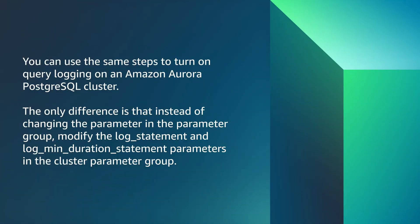You can use the same steps to turn on query logging on an Amazon Aurora Postgres cluster. The only difference is that instead of changing the parameter in the parameter group, you modify the log_statement and log_minimum_duration_statement parameters in the cluster parameter group.